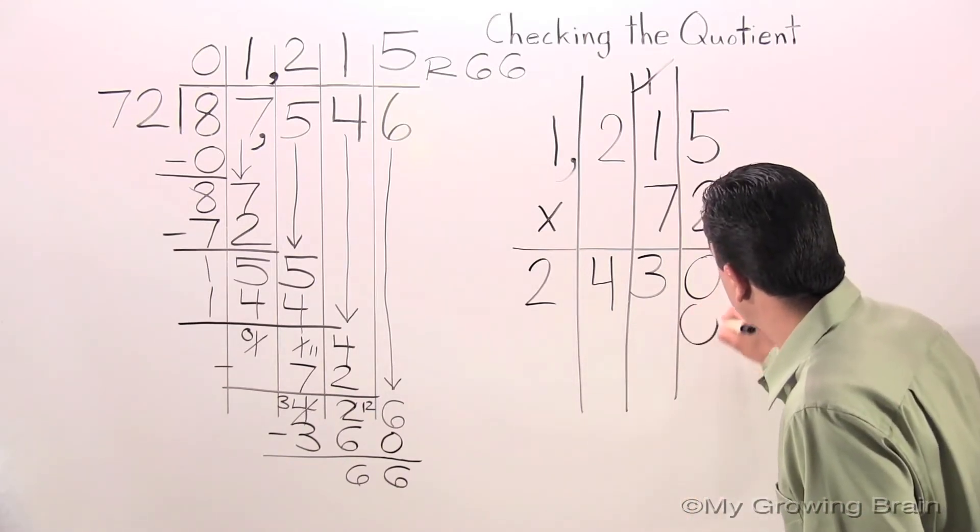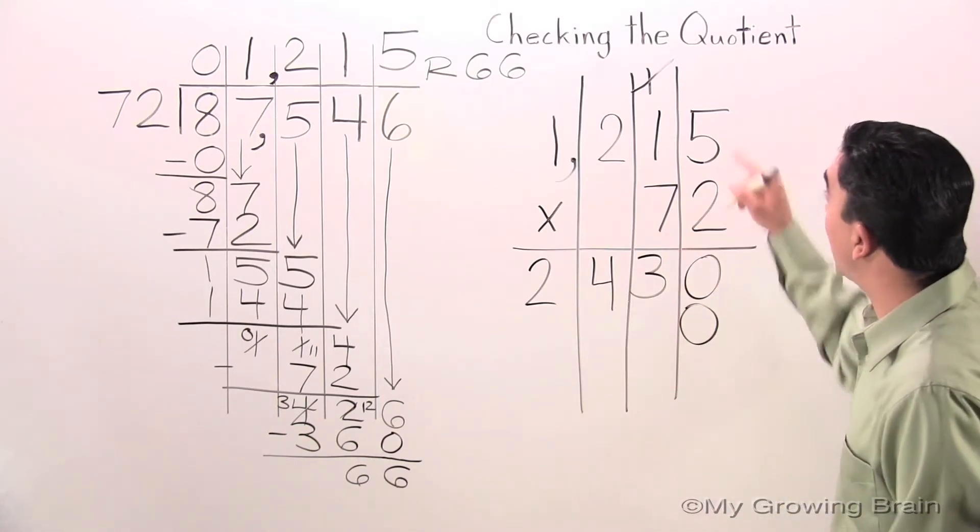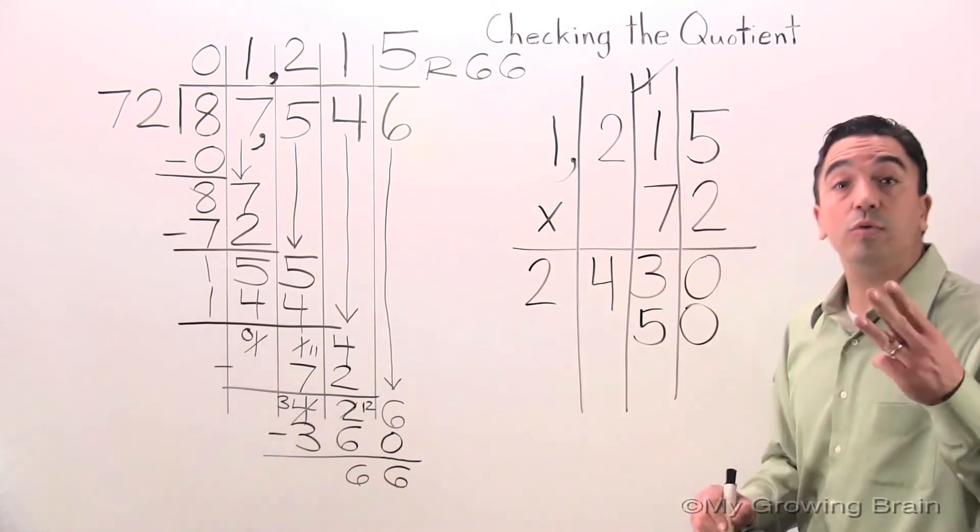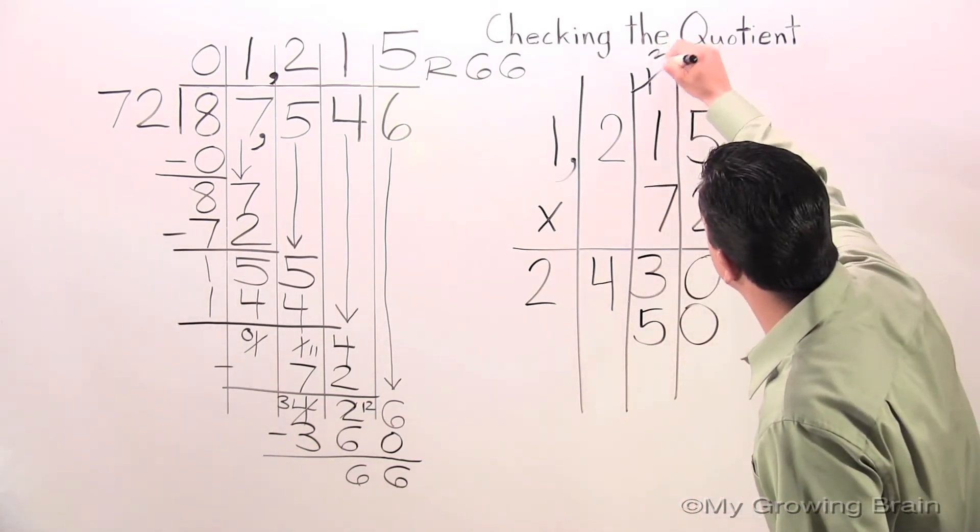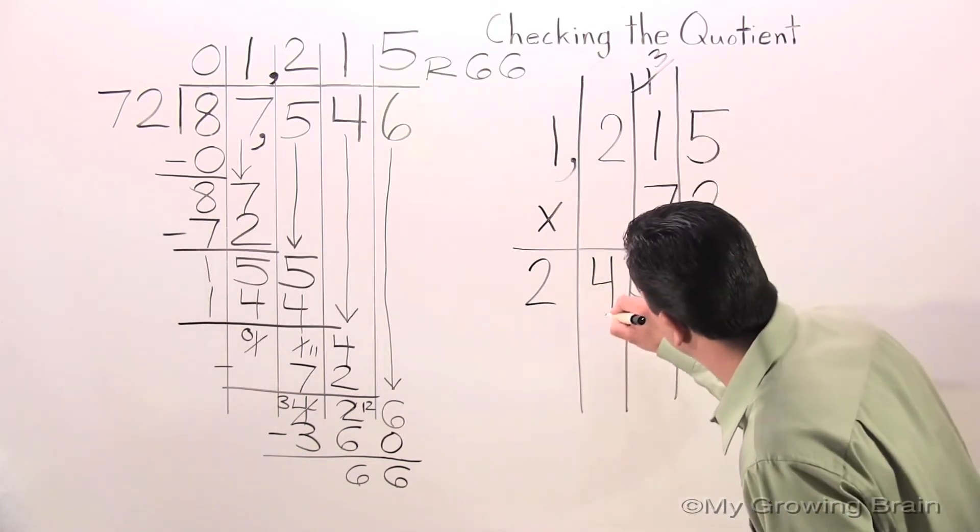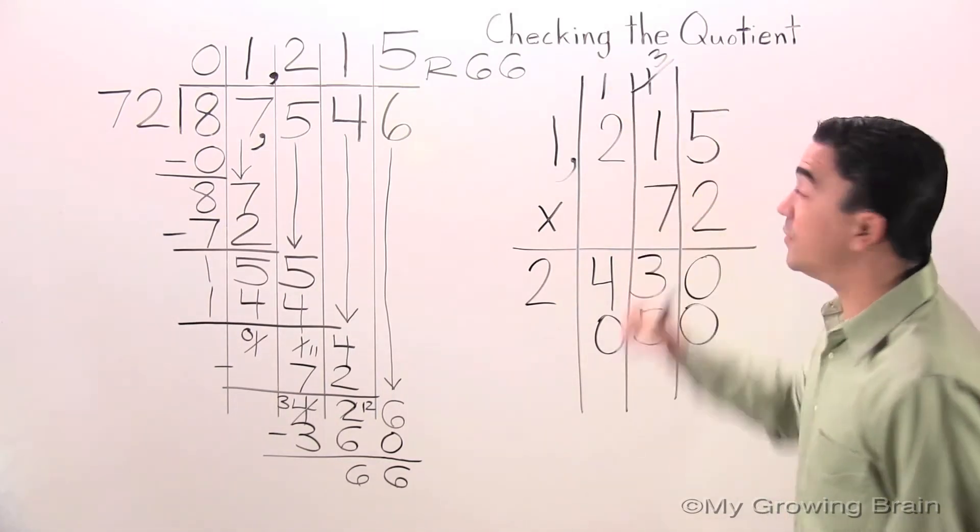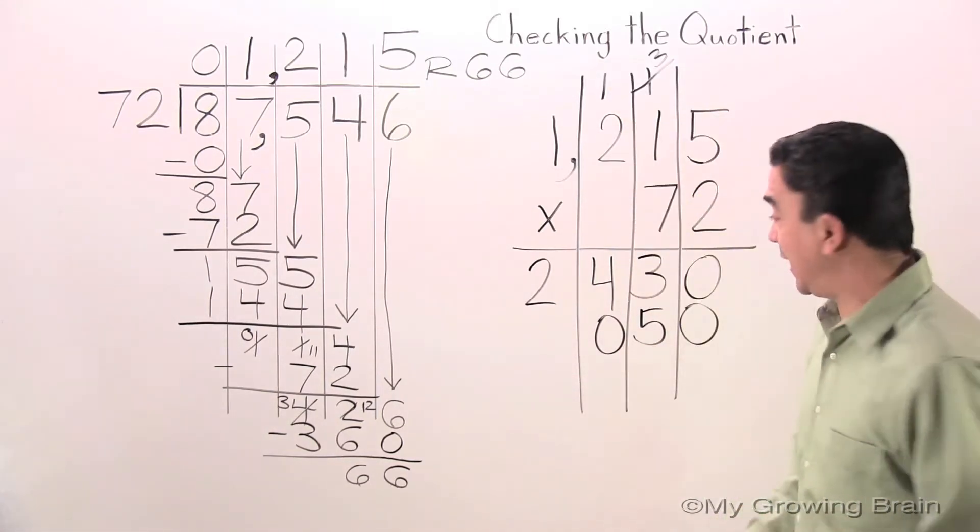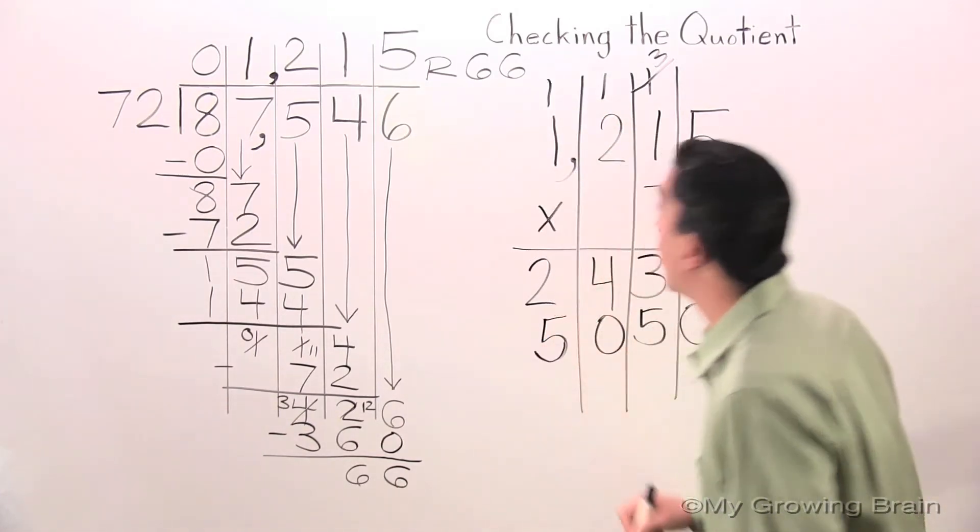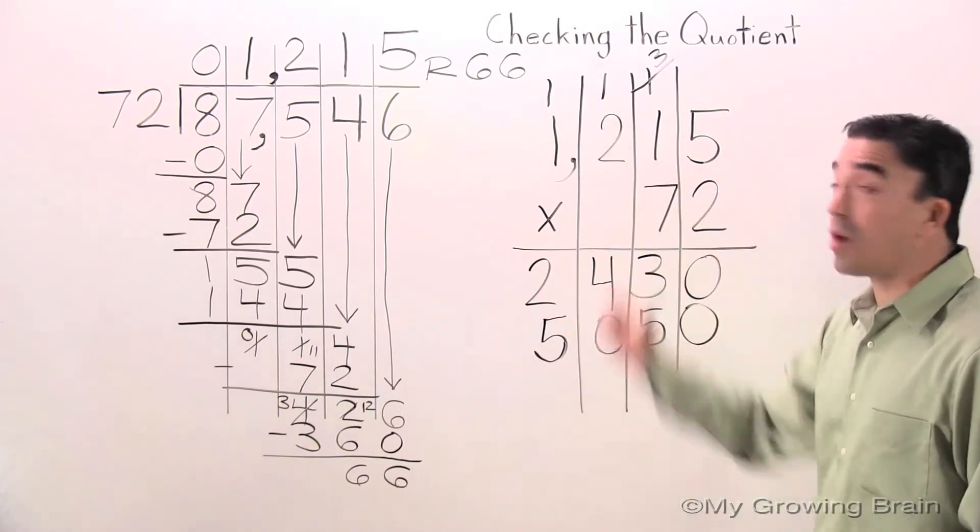All right, now I've got my place mark. Go to the 7 in the tens. 7 times 5, 35. Regroup the 3. 7 times 1, 7. Plus 3, 10. Regroup the 1. 7 times 2, 14. Plus 1, 15. Regroup the 1. 7 times 1, 7. Plus 1, 8.